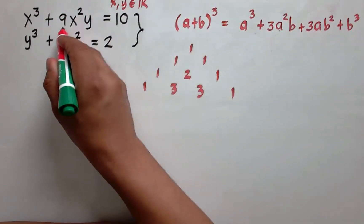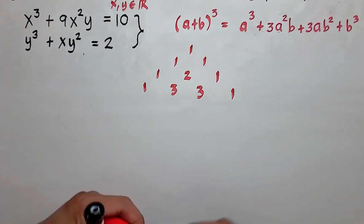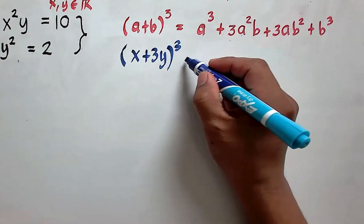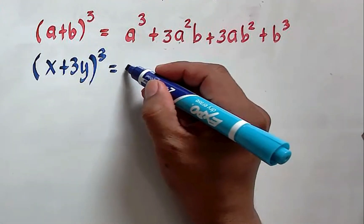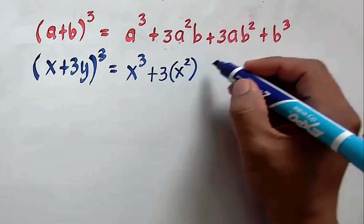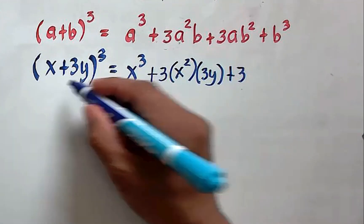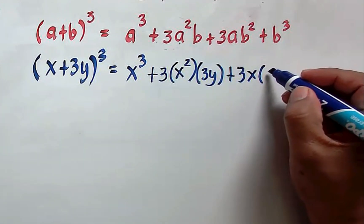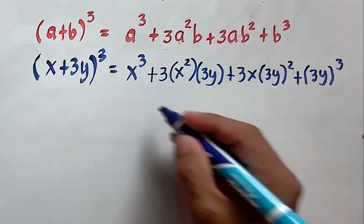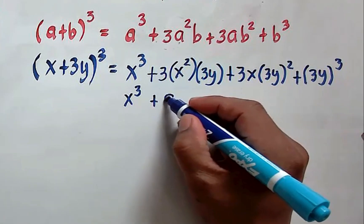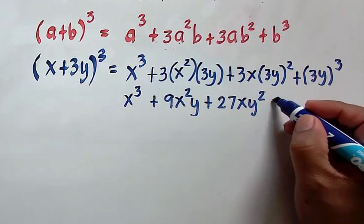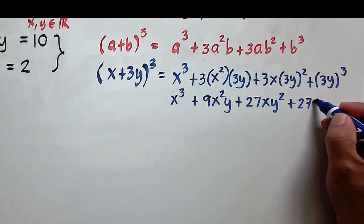The problem is we have 9x squared y here. So following this cube of a binomial, if we take the cube of the binomial x plus 3y, this equals x cubed plus 3 times x squared times 3y, plus 3 times x times (3y) squared, plus (3y) cubed. This simplifies to x cubed plus 9x squared y plus 27xy squared plus 27y cubed.